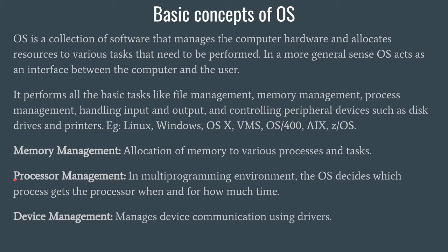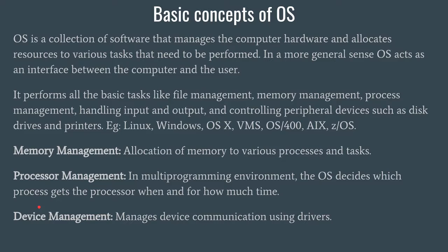It is not possible for a human to understand what is best for the underlying processor, so the OS is programmed to do every internal operation for you. This is especially useful in today's multiprogramming environment, since we cannot rely on processors that perform only one task at a time. It is the OS that decides which process gets the processor, when, and for how much time — this is basically task scheduling.